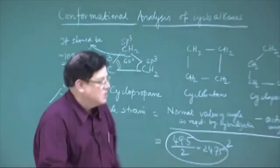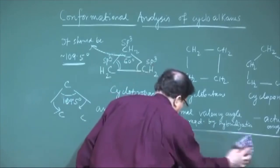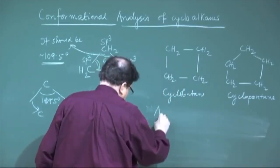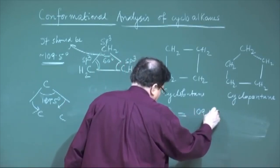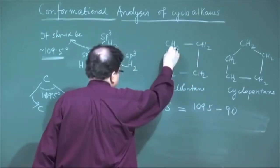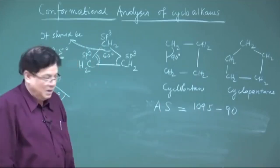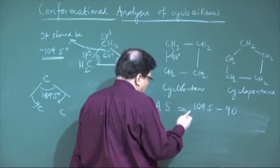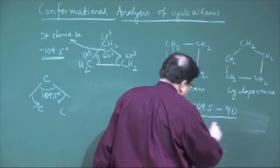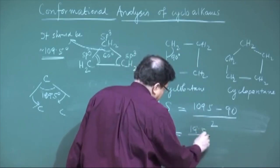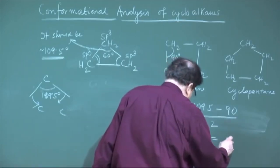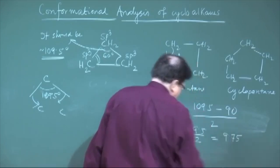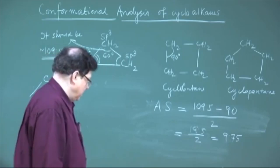You can calculate the angle strain for cyclobutane. Considering it as a regular square, the internal angles are 90 degrees. So the angle strain is (109.5 − 90) / 2 = 19.5 / 2 = 9.75 degrees. In cyclopropane the angle strain was 24.75, so cyclobutane has less angle strain and is more stable than cyclopropane.